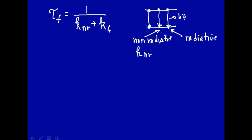Light coming out is what radiative means. We give this the rate constant kf. So we define the fluorescence lifetime as the reciprocal of the sum of the rate constants — kf for fluorescence and the rate constant for non-radiative decay.